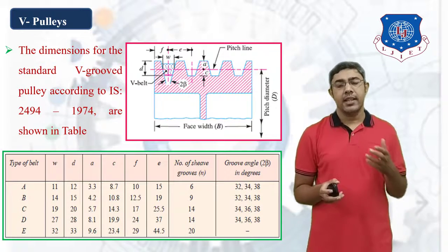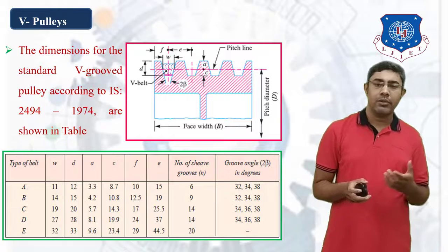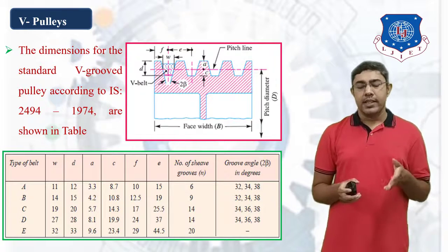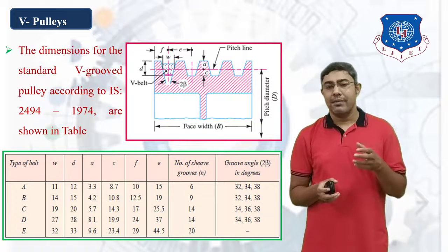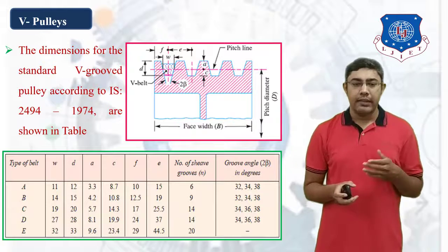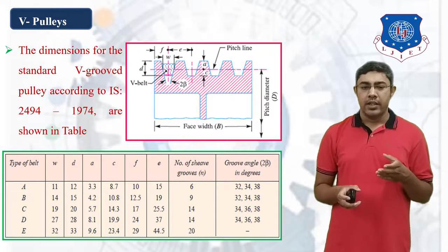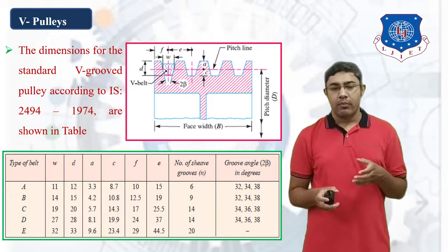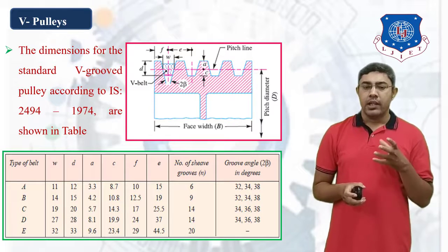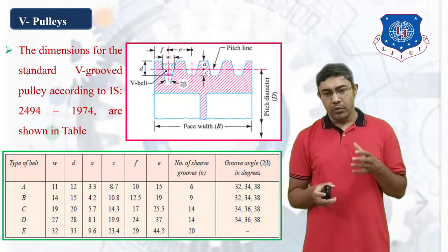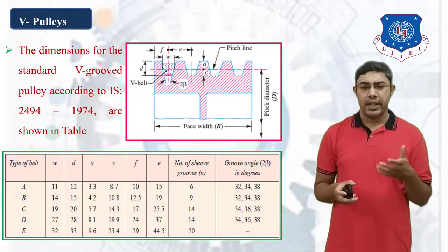The dimensions for the V-Belt pulley are shown here. The first column lists different belt types A, B, C, D, E, and the corresponding pulley dimensions follow. For type E: W is 32, D is 33, A is 9.6, C is 23.4, F is 29, and E is 44.5. These are the dimensions you can take from the standard.